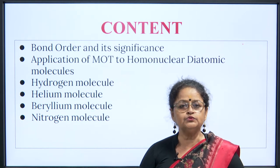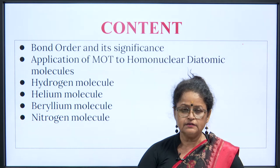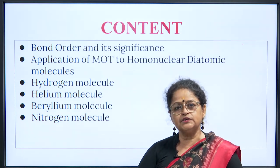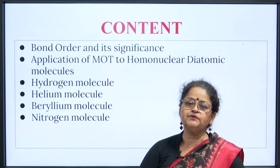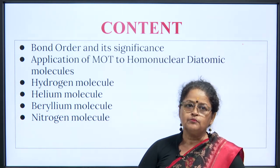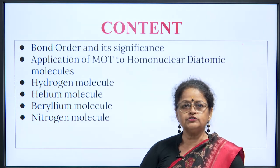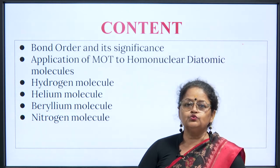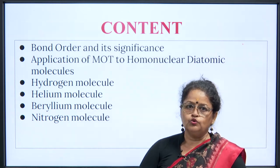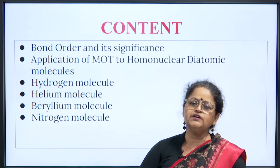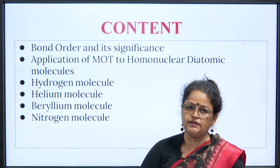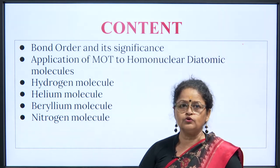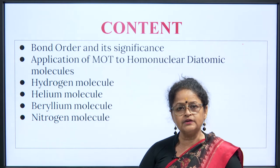Now, what we are going to take up is that once we have the molecule, once we draw the molecule, there are a number of things we can interpret by seeing the bond order of the molecule. Then we are going to use the molecular orbital theory to write and draw the homonuclear diatomic molecules and thereafter the heteronuclear diatomic molecules. But in lecture 2, we are more focused on homonuclear diatomic molecules.